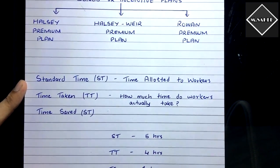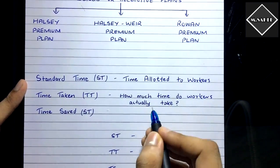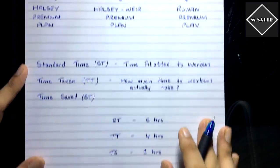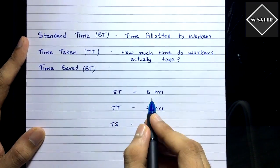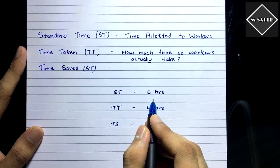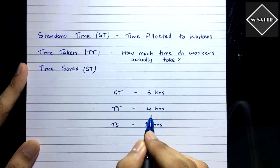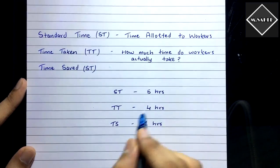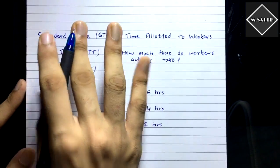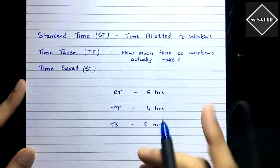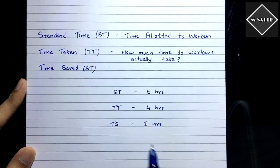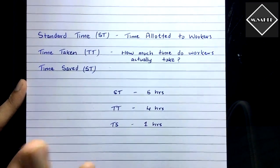The time workers actually take to complete production is called time taken. And if they complete the production in less than the standard time — for example, if the standard time is five hours but the worker takes only four hours — then the time saved is one hour. Simple: standard time minus time taken equals time saved.